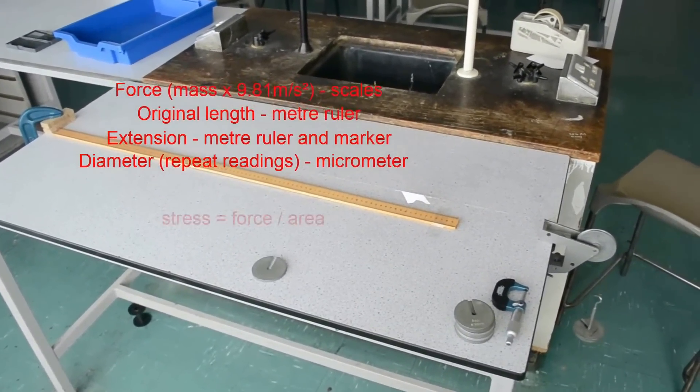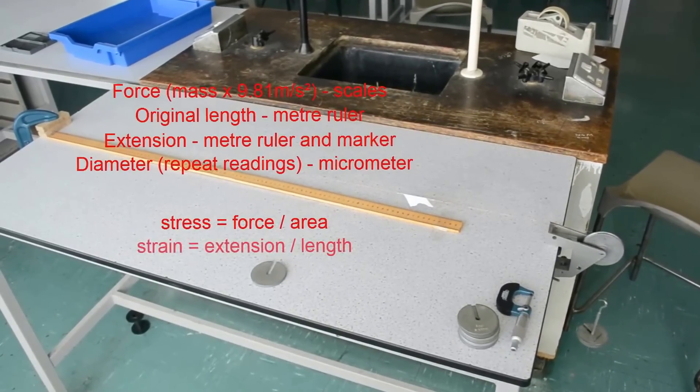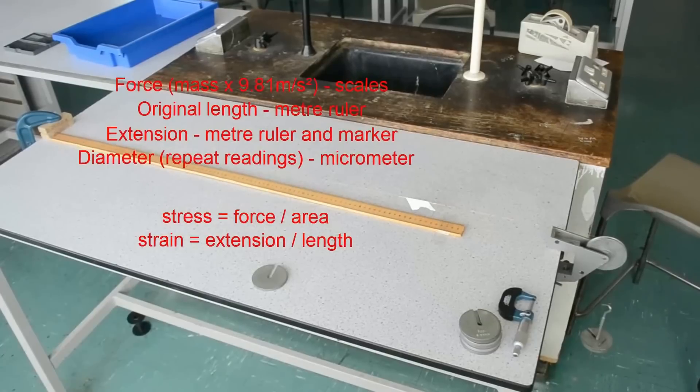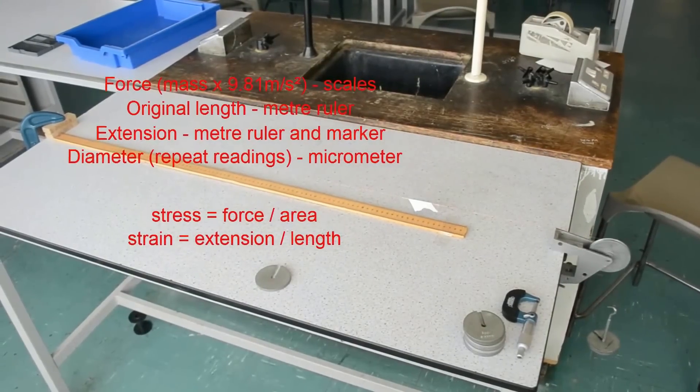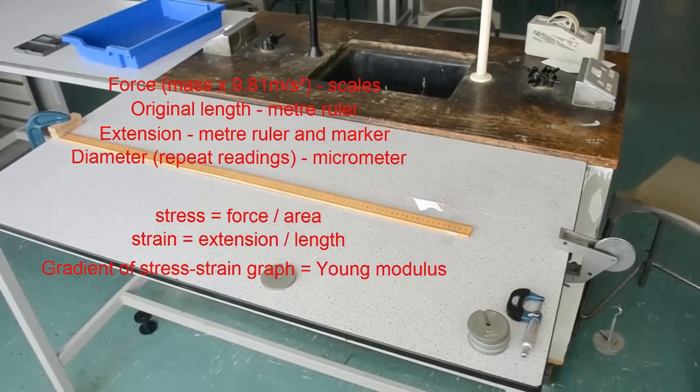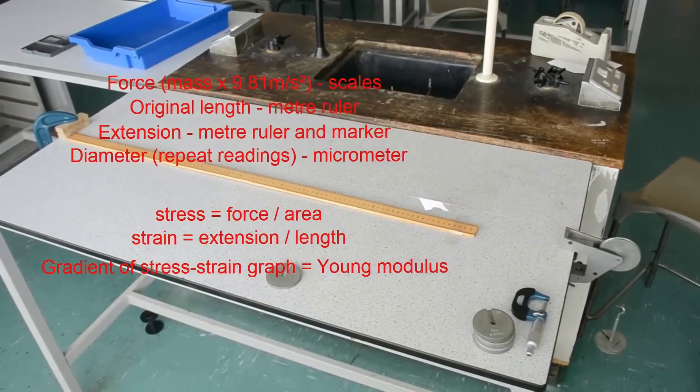And then using those values, we can calculate the stress by dividing force by area and the strain by dividing the extension by the original length. We would then plot a graph of stress against strain, the gradient of which will be the Young modulus.